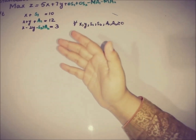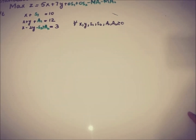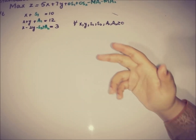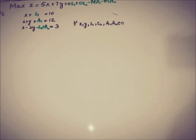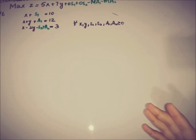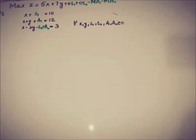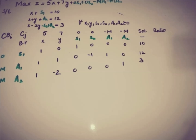This is the standard form: maximize Z. The objective function is 5x plus 7y, and the constraints have three possible types — the equality type, the less-than-or-equal-to type, and the greater-than-or-equal-to type. Now we are making the initial table using the simplex algorithm.